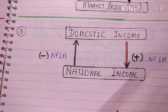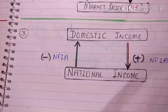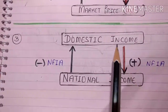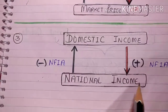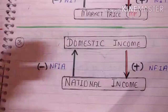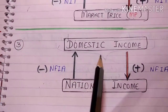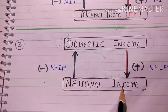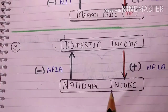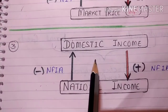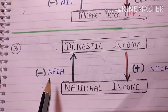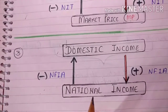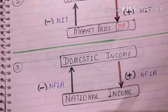The third formula is domestic income and national income, which we learned about in our previous video. If you are having domestic income and you have to convert into national income, you have to add NFIA. In the other case, if you are having national income and you have to convert into domestic income, you have to subtract NFIA from national income.